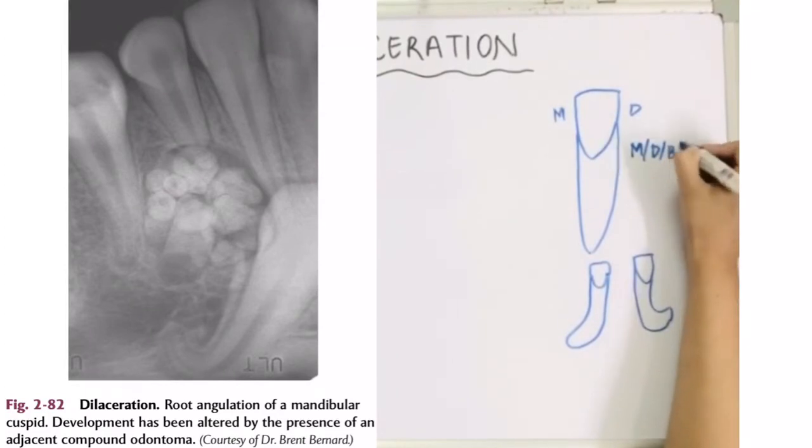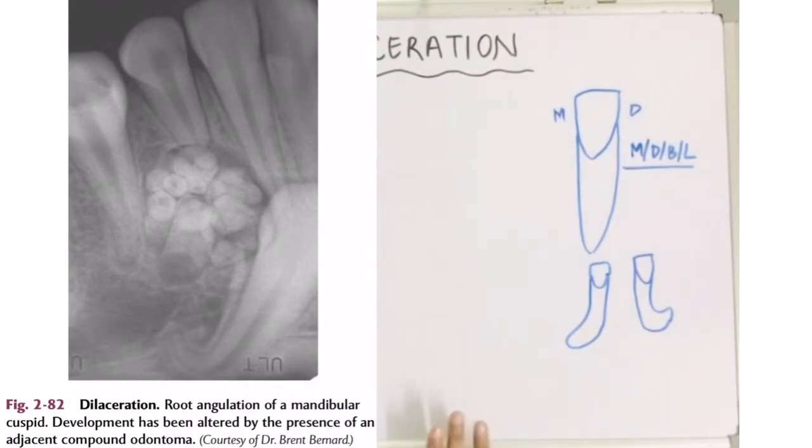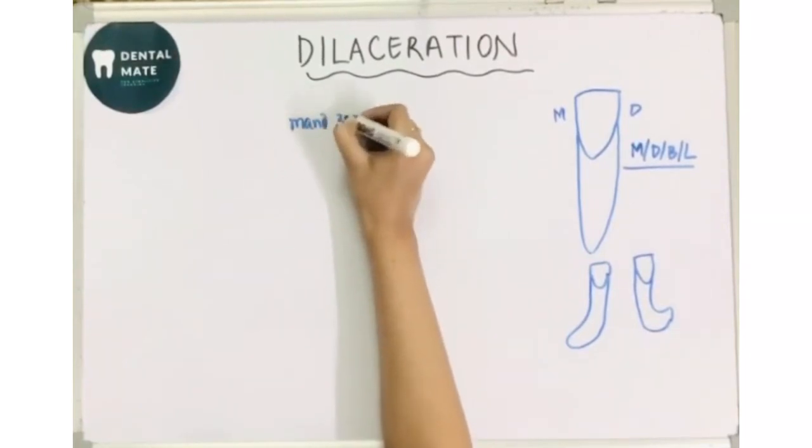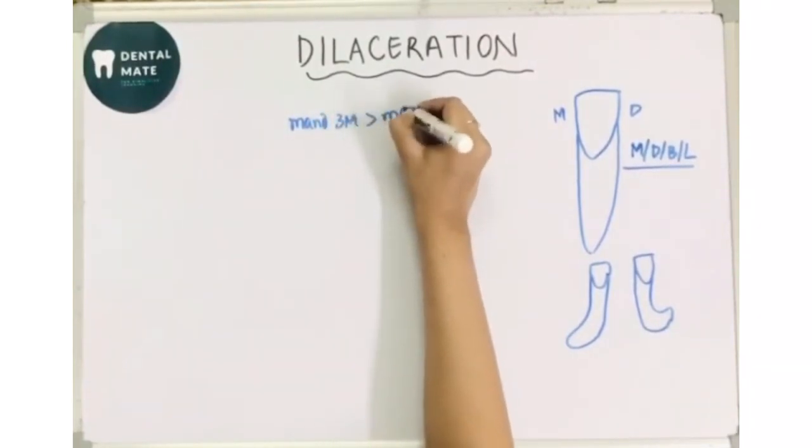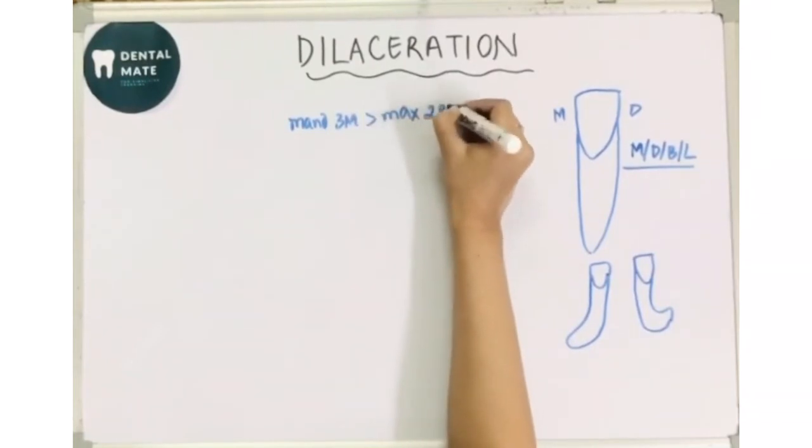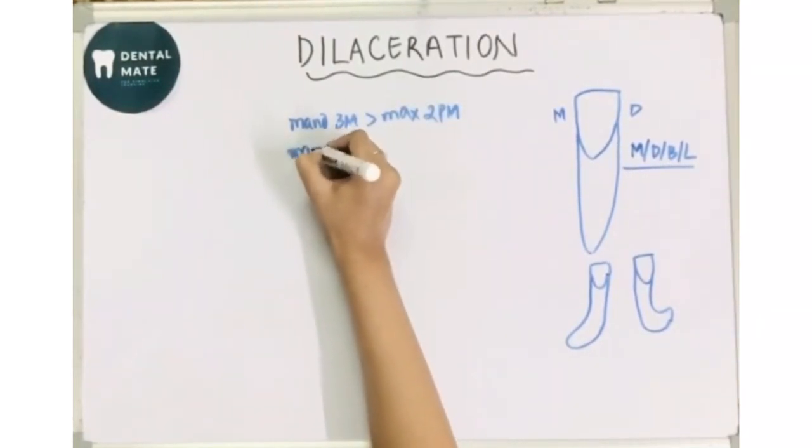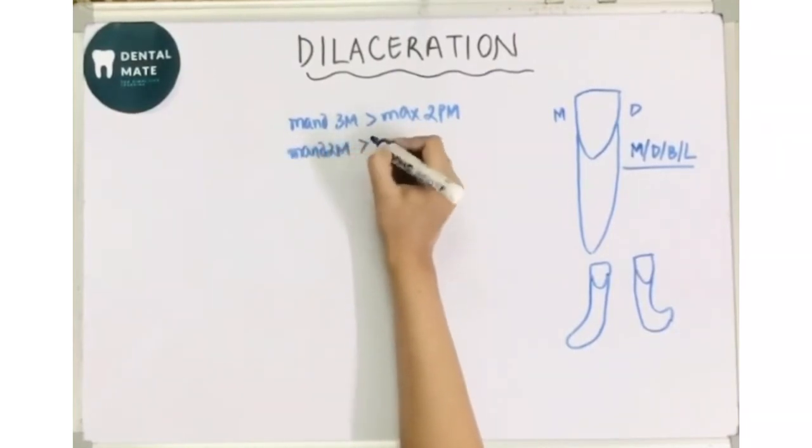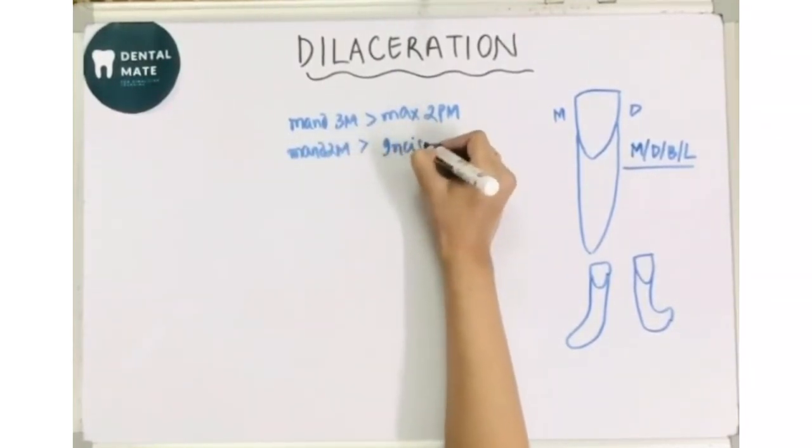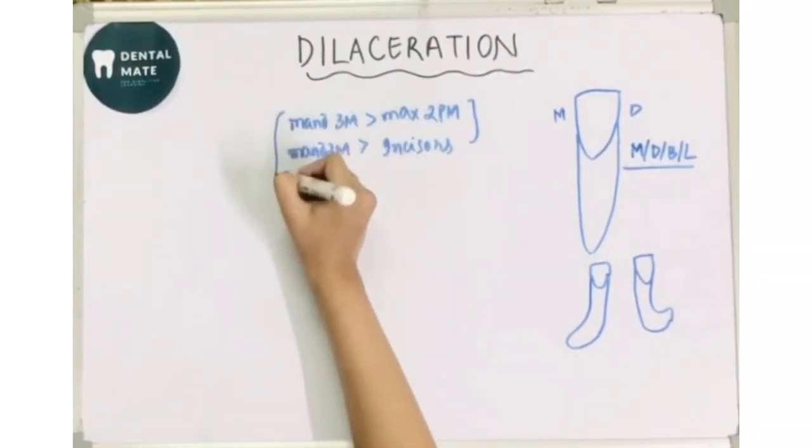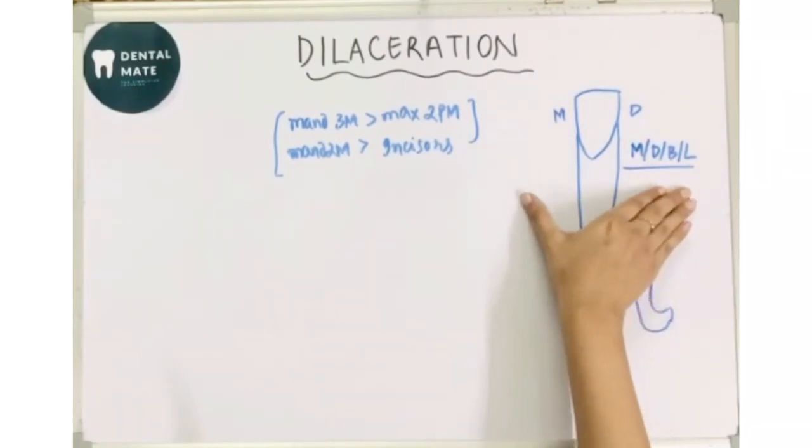Now if we talk about the clinical features, then what is it? See, this condition is most commonly seen in mandibular third molars. After that it is seen in maxillary second premolar, then mandibular second molars, then incisors, which cover both the incisors, be it maxillary or the mandibular incisors.